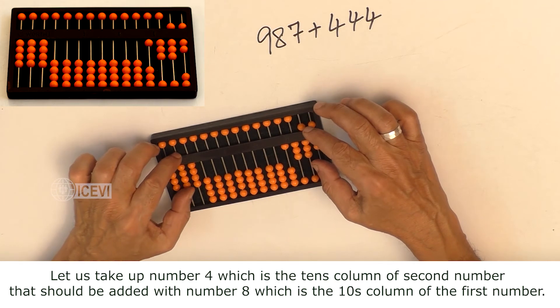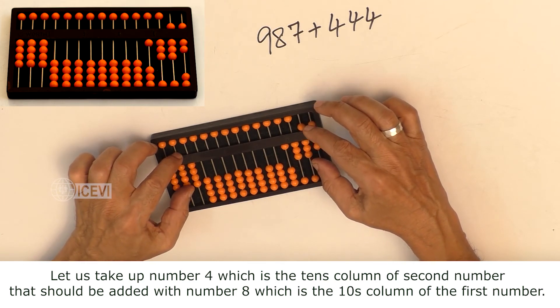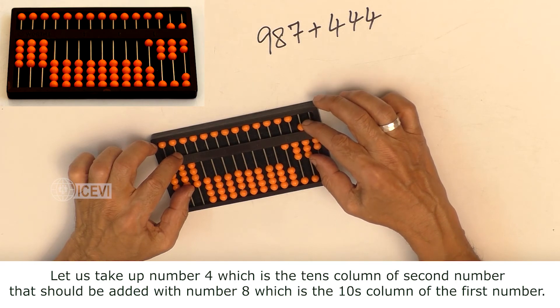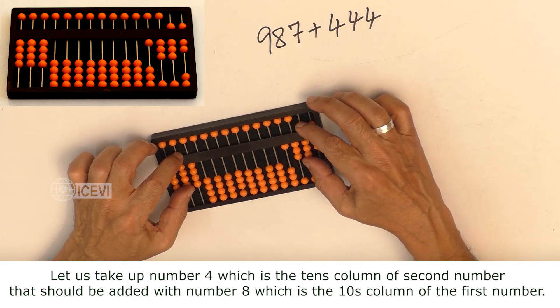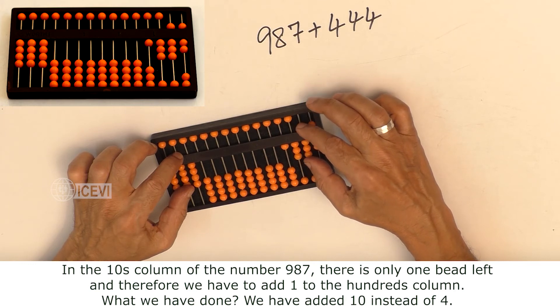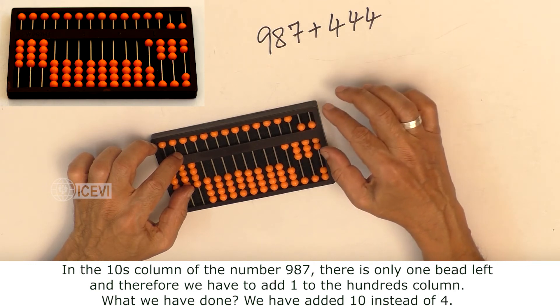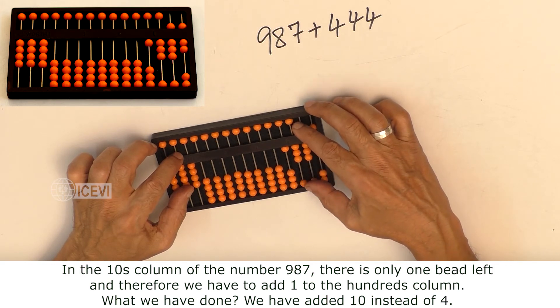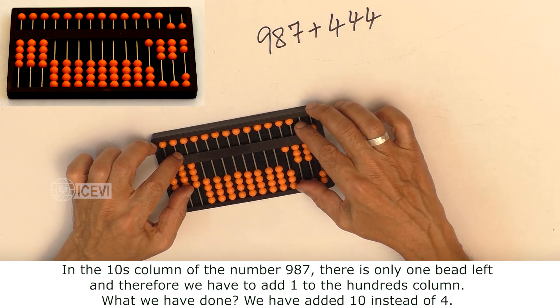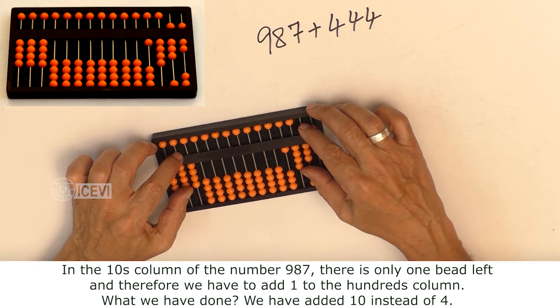Let us take up the number 4, which is in the tens column of the second number. That should be added with number 8, which is in the tens column of the first number. In the tens column of the number 987, there is only one bead left, and therefore we have to add 1 to the hundreds column.